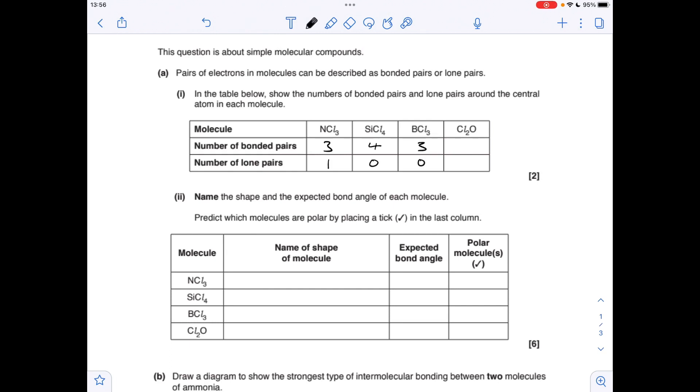The central atom for Cl2O is the oxygen. Oxygen's in group 6, using two electrons to bond to those two chlorines. So there's two bonding pairs and there's going to be two lone pairs because there's four electrons left over.